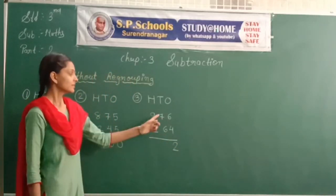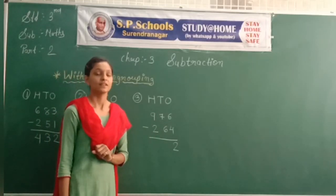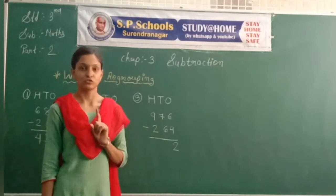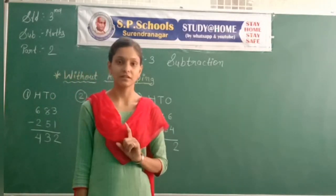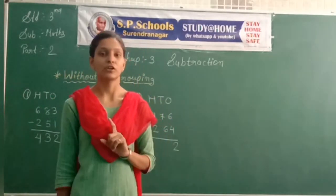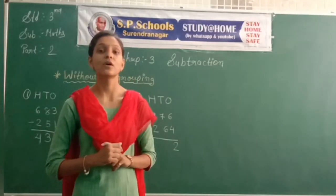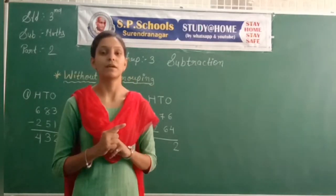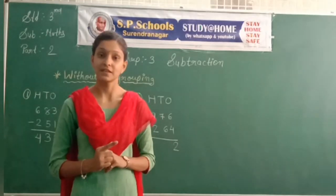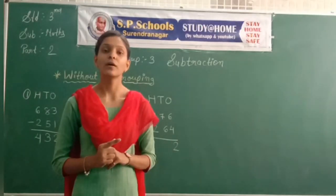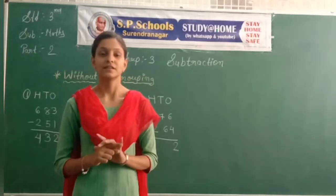7 minus 6. That's easy to solve. Speed counting shortcut: when we subtract a number from its consecutive next number — that is, its 'before number' — the answer is always 1. For example, 3 minus 2: 3's before number is 2, so answer is 1. Similarly 9 minus 8: 9's before number is 8, so answer is 1.